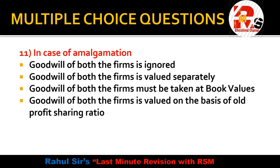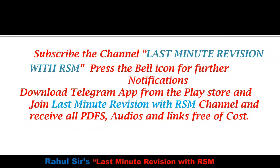Question 11: in case of amalgamation — goodwill of both firms is ignored, goodwill of both firms is valued separately, goodwill must be taken at book values, or goodwill is valued on the basis of old profit sharing ratio? In amalgamation, goodwill of both firms is valued separately — we do not mix them. That is the concept of amalgamation.